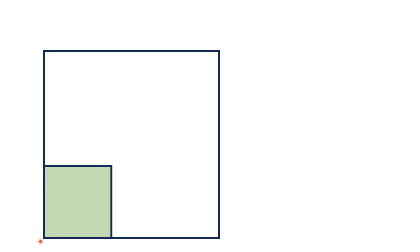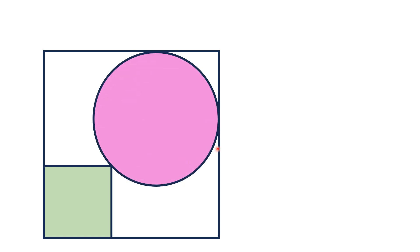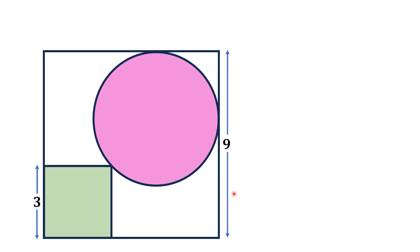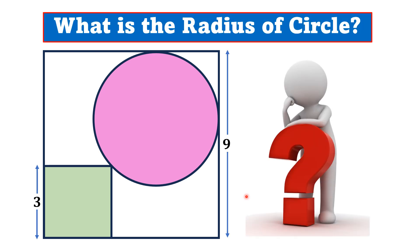In this problem, a smaller square is inscribed in a larger square such that two of its sides lie on two adjacent sides of the larger square. A circle is inscribed in the larger square, tangent at three points: one is a corner of the smaller square, and the other two lie on two adjacent sides of the larger square. The side length of the smaller square is 3 units and the larger square is 9 units. We need to find the radius of this circle.